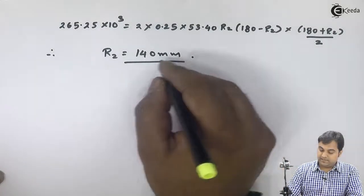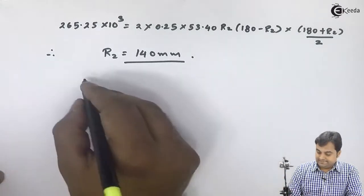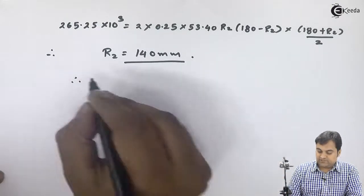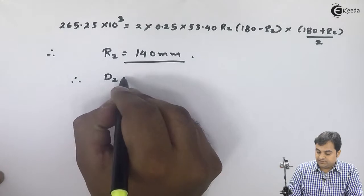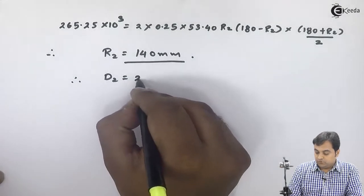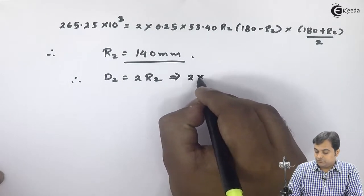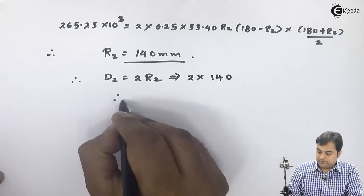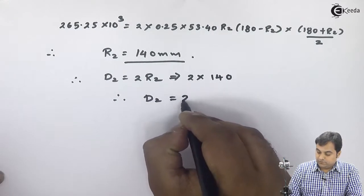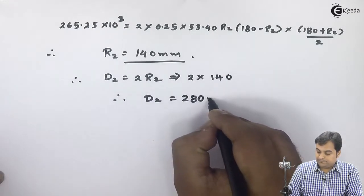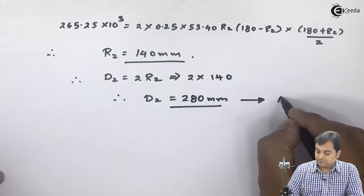The inner radius R2 is 140 mm. The question asks for the inner diameter, so D2 equals twice of R2, that is 2 into 140, giving D2 equal to 280 mm. This is my first answer.